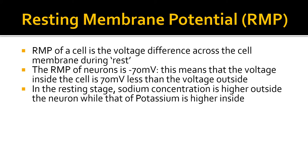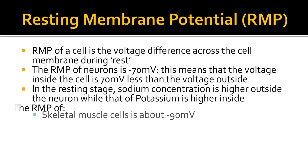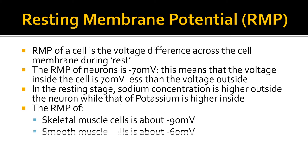In the resting stage, sodium concentration is higher outside the neuron, while that of potassium is higher inside the neuron. The RMP of skeletal muscle cells is about minus 90 millivolts, and that of smooth muscle cells is about minus 60 millivolts.